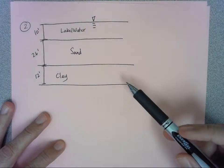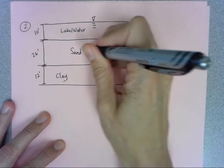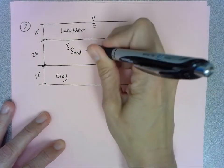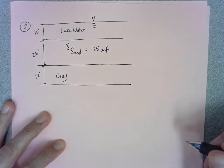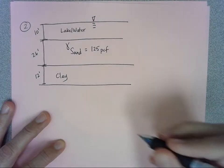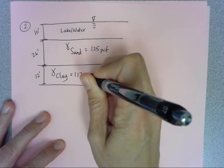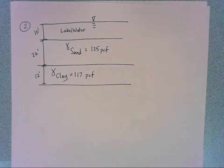We also know that the saturated unit weight of the sand, gamma sand, equals 125 pounds per cubic foot, and the saturated unit weight of the clay, gamma clay, equals 117 pounds per cubic foot. If you don't remember, gamma saturated is just the same as gamma total that we were using on the phase diagram.